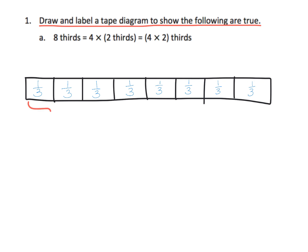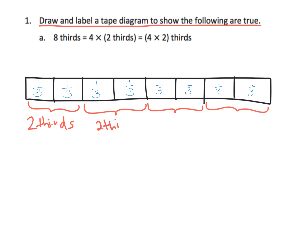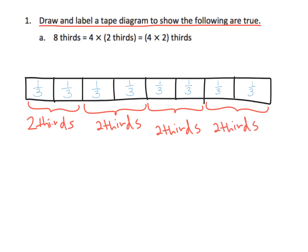Here's two-thirds, here's two-thirds, here's two-thirds, and here's two-thirds. So I can group them: two-thirds, another two-thirds, another two-thirds, and another two-thirds — and there it is. Now we can see four groups of two-thirds.